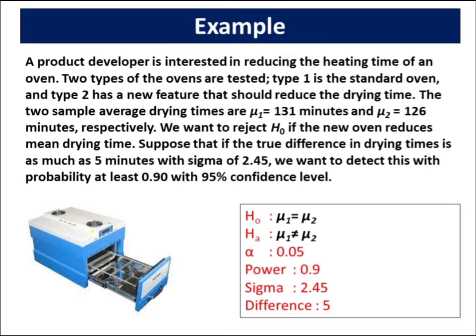The null hypothesis is that the mean drying times for the standard oven is the same as the new feature oven. The alternate hypothesis is that mean drying time is not the same between the standard oven and the new feature oven. The significance level is 0.05, the power is 0.9, the standard deviation is 2.45, and the delta or difference is 5.